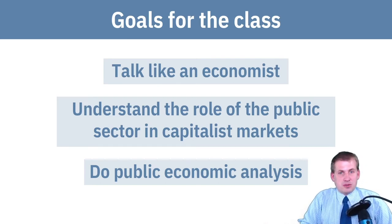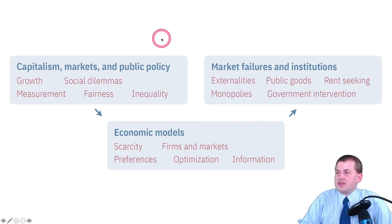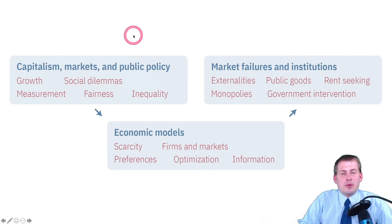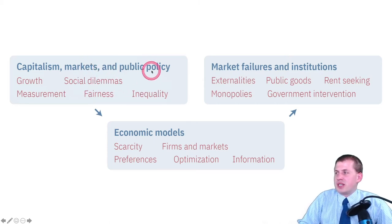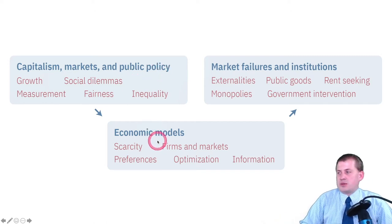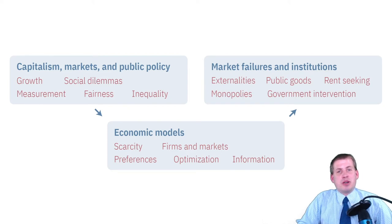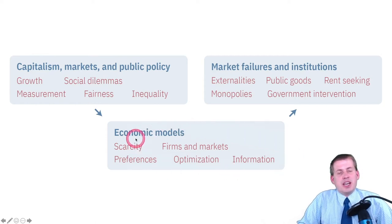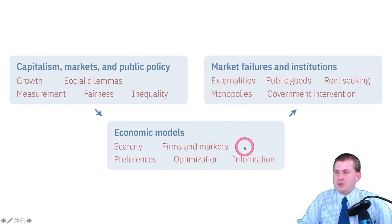The class is divided into three general sections. The first unit is about capitalism, markets, and public policy. Then in the next few sessions we'll be talking about social dilemmas, fairness, and inequality and how that influences markets and public policy. After that, we'll go into the world of economic models — supply and demand, indifference curves, budget lines, and all that standard economics content.